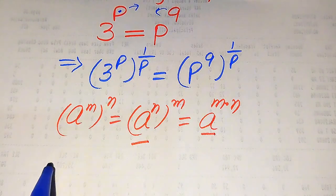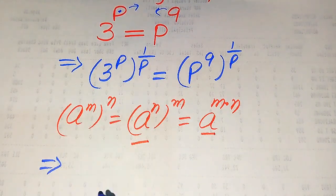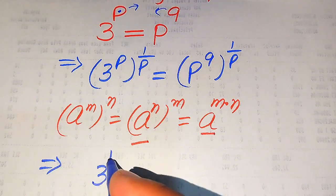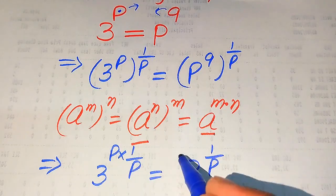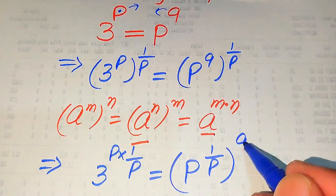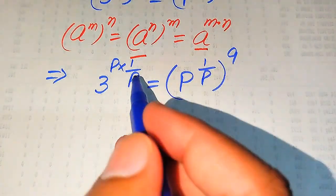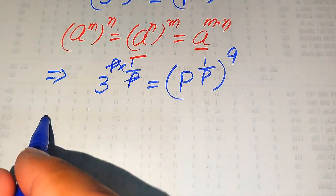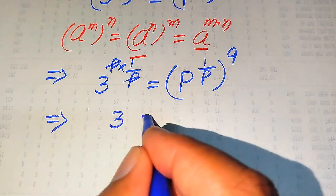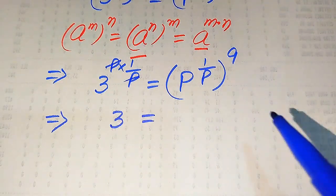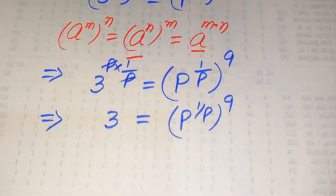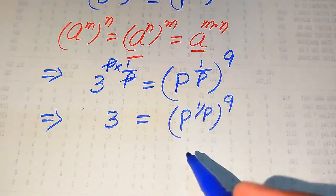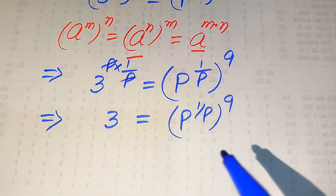When we apply this, the left-hand side becomes 3 to the power of p multiplied by 1 over p, and the right-hand side — after interchanging the two exponents — becomes p to the power of 1 over p, whole raised to the power of 9. On the left-hand side, the p cancels out and we get 3 to the power of 1.